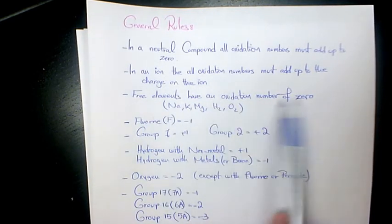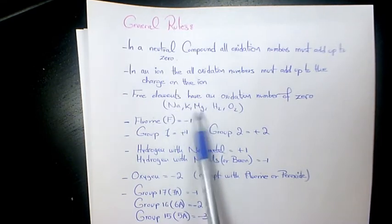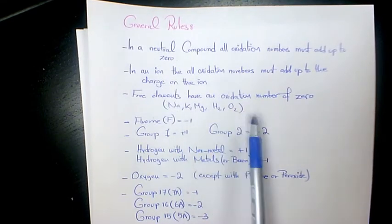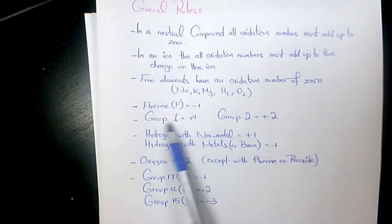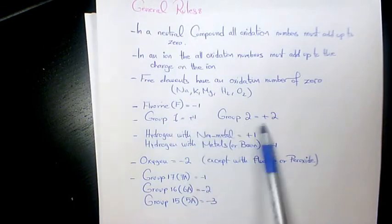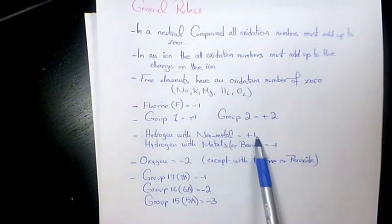Free elements have an oxidation number of zero, such as sodium, potassium, magnesium, hydrogen, and oxygen. Fluorine is negative one. Group one elements are plus one. Group two elements are plus two. Hydrogen with non-metals is plus one.